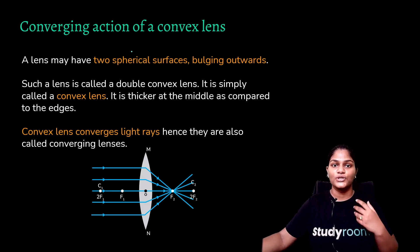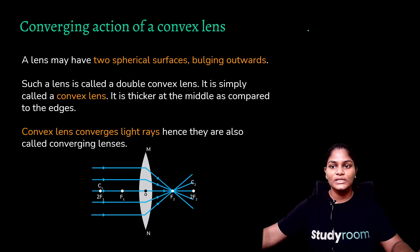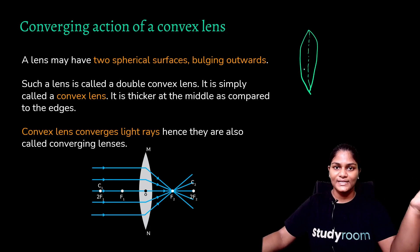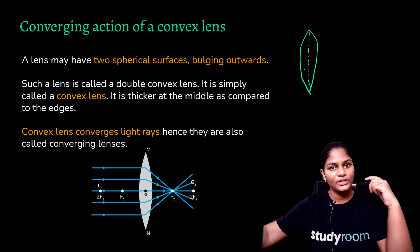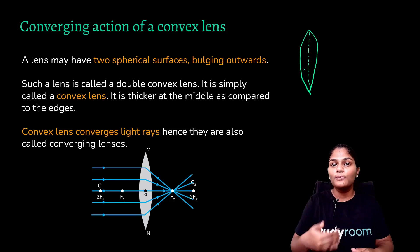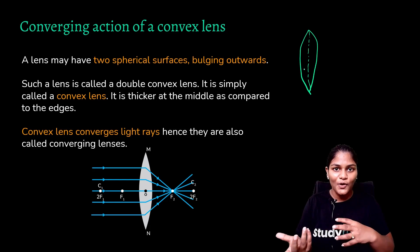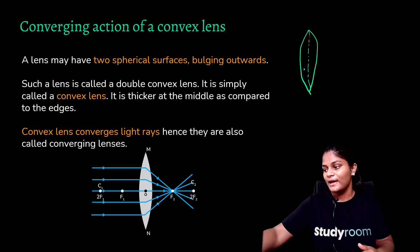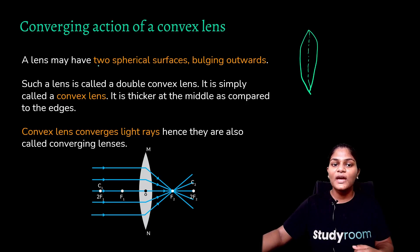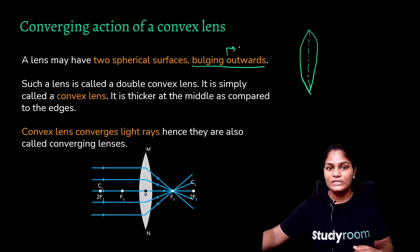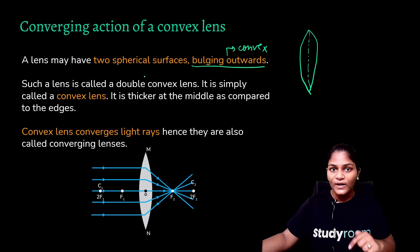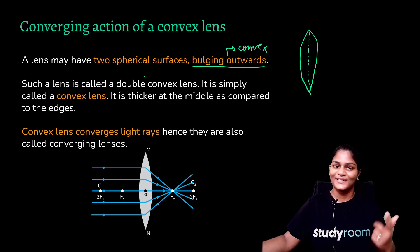Now we are going to study the converging action of a convex lens. When both surfaces are convex, it is known as a convex lens. In our studies, we are using a biconvex lens, but by convention we just call it a convex lens. So don't get confused — in your book we always say convex lens, but what we are actually using is a biconvex lens where the distance of the optical axis is the same from both surfaces. A lens may have two spherical surfaces bulging outwards — that means it is a convex lens.